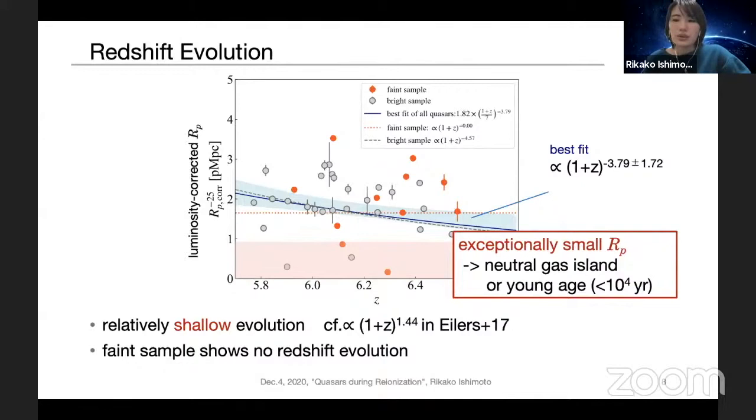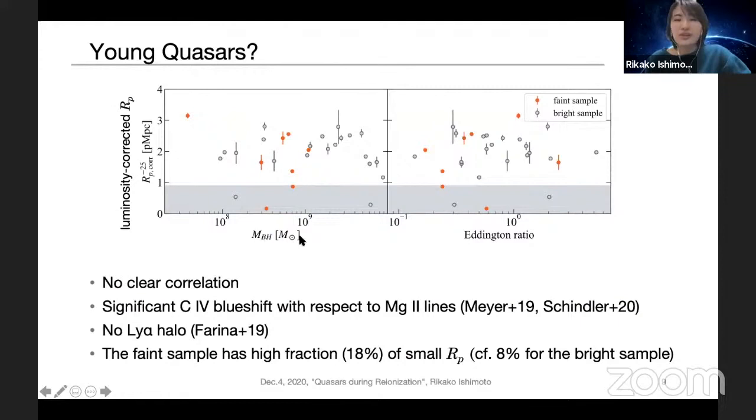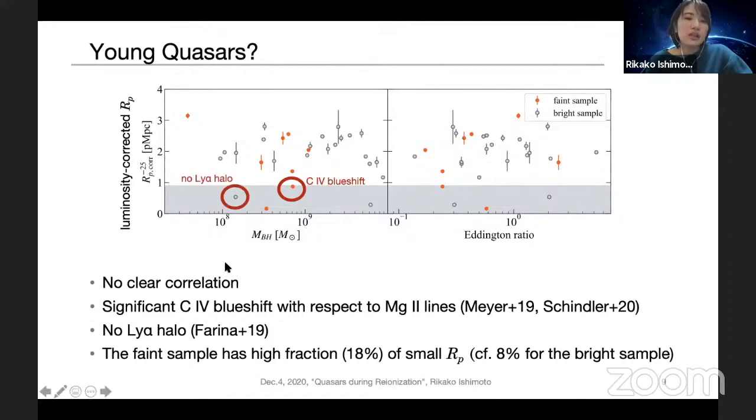In order to check the possibility of the young age, we examined the black hole masses and the Eddington ratio of our sample, but there is no clear correlation between them. However, some observational results support the possibility of the young age. First, one of the young quasar candidates shows significant carbon four blue shift with respect to Mg II lines, suggesting strong outflow due to young quasar age. And another young quasar candidate were observed to have no Lyman alpha halo, implying that these do not have enough time to light up surrounding IGM.